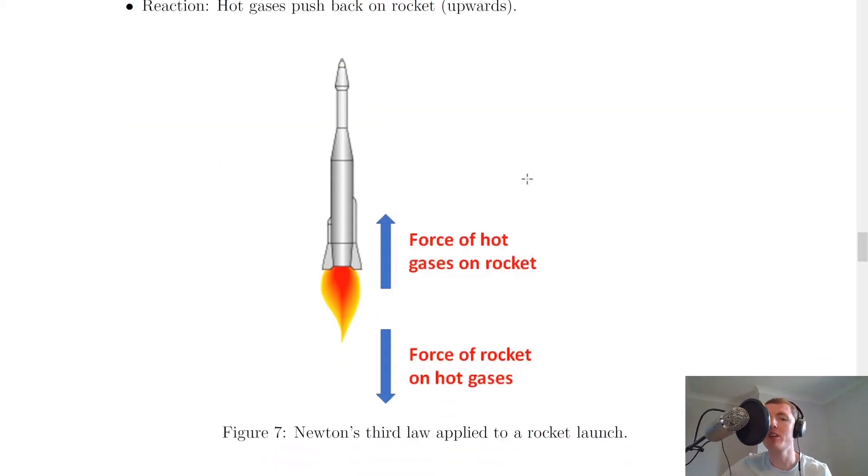And that's shown in this picture here. So we've got the force of the rocket on the hot gases downwards, i.e. the rocket is pushing those hot gases downwards and we've got those hot gases pushing back on the rocket itself because that is where the hot gases are coming from.